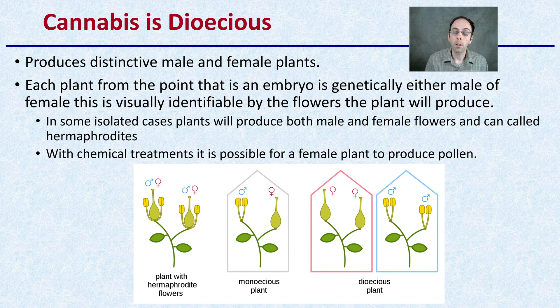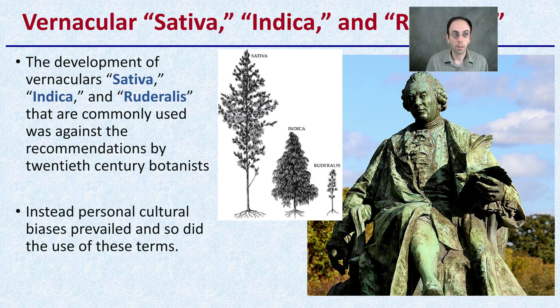Other plants may produce monoecious forms, where they produce male and female flowers on the same plant. Cannabis is not like that — it produces distinctive male or female plants.